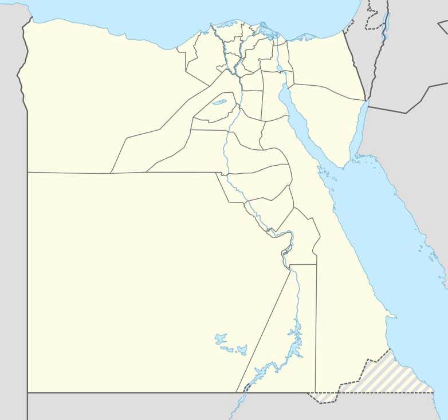The main city of prehistoric Upper Egypt was Nekheb, whose patron deity was the vulture goddess Nekhbet. By about 3600 BC, Neolithic Egyptian societies along the Nile had based their culture on the raising of crops and the domestication of animals. Shortly after 3600 BC, Egyptian society began to grow and increase in complexity. A new and distinctive pottery, which was related to the Levantine ceramics, appeared during this time.